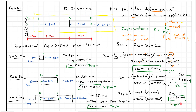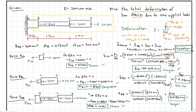We've solved for each force and each individual deformation. Now we add them all together: delta AB is plus 0.0156 millimeters, delta BC is minus 0.096 millimeters, and delta CD is plus 0.122 millimeters. The total deformation is plus 0.042 millimeters. That's our final answer — the total bar ABCD is getting longer by 0.042 millimeters.